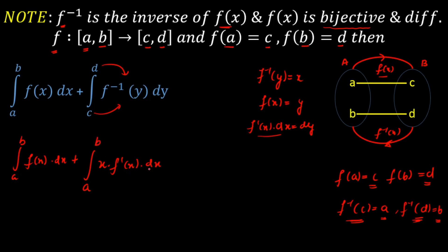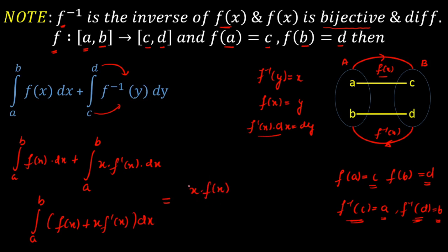Now I can combine these two integrals since the limits are the same. The combined integral from a to b becomes the integral of [f(x) + x · f'(x)] dx. This integrand is exactly the derivative of x · f(x), so the integral evaluates to x · f(x), evaluated from a to b.